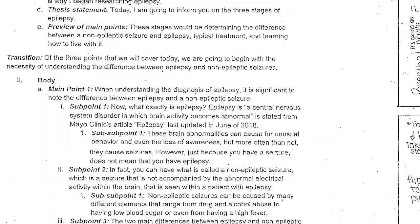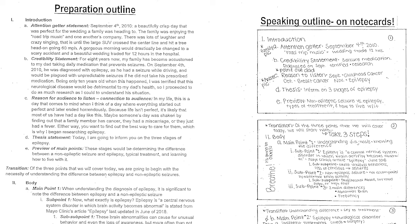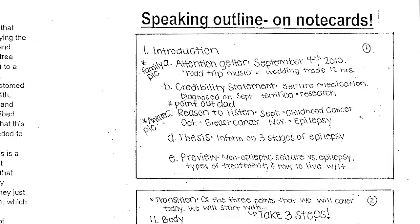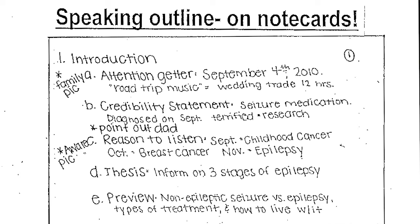When we start with our outlines and begin the process of practicing, you'll start by practicing off of your full sentence outline. Getting used to the visual framework is important because then we will convert to the speaking outline. Now let's look at the right-hand side and look at the speaking outline on note cards. The first thing that should jump out at you is that these are chopped up. You can see she's got 'Attention Getter: September 4th, 2010,' then 'Road Trip Music' and 'Wedding Trade 12 Hours.' You and I don't know what that means, but she does — both because it was her life experience and because she knows her speech from practice.